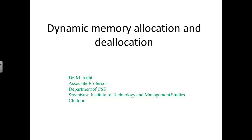Now let us start the next topic: dynamic memory allocation and deallocation. We have already seen the difference between C and C++ regarding memory allocation. In C programming, malloc and calloc are used for dynamic memory allocation and contiguous memory allocation. In C++, we will be using two operators: the new operator for memory allocation and the delete operator for memory deallocation.